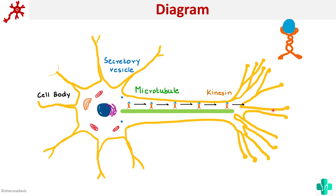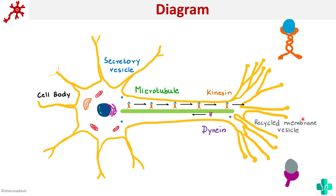Now suppose we have a vesicle that is released — a secretory vesicle containing a neurotransmitter — and we want to recycle the vesicle. Then we have another molecular motor involved for this. This recycled membrane vesicle is transported by another molecular motor called dynein. Dynein walks along the microtubules and transports it back to the soma.